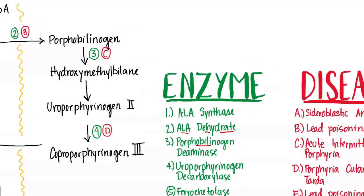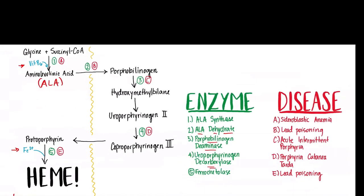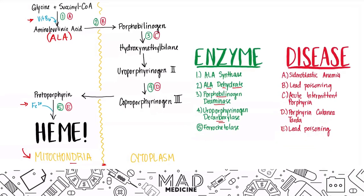Porphobilinogen is then converted into hydroxymethylbilane via porphobilinogen deaminase. Through a series of steps you end up at uroporphyrinogen III, which is then converted to coproporphyrinogen III via uroporphyrinogen decarboxylase. Finally, coproporphyrinogen III is transported back across the mitochondrial membrane into the mitochondria, where it becomes protoporphyrin.